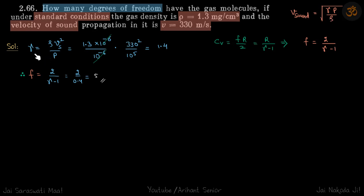So from the first equation, gamma is equal to rho into v squared by P. So we'll put those values.